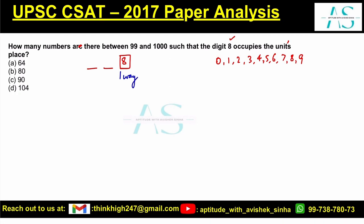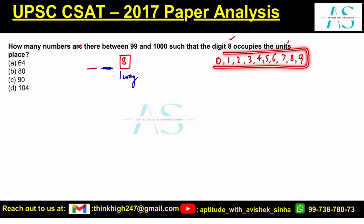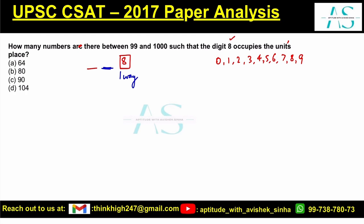Now, what about the tens place? Here, zero can come, one can come, two, three, four, five, six, seven, eight, nine — anything can come here. So out of these ten options, anything can come, meaning this spot can be filled in ten ways.